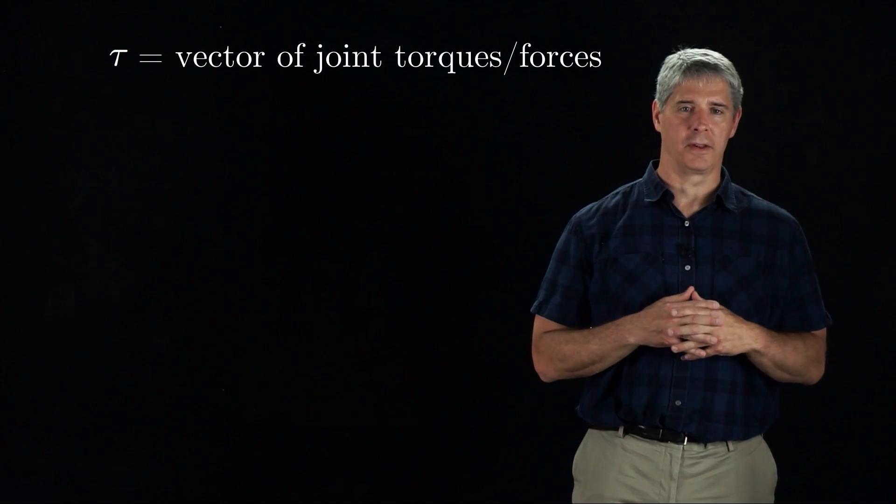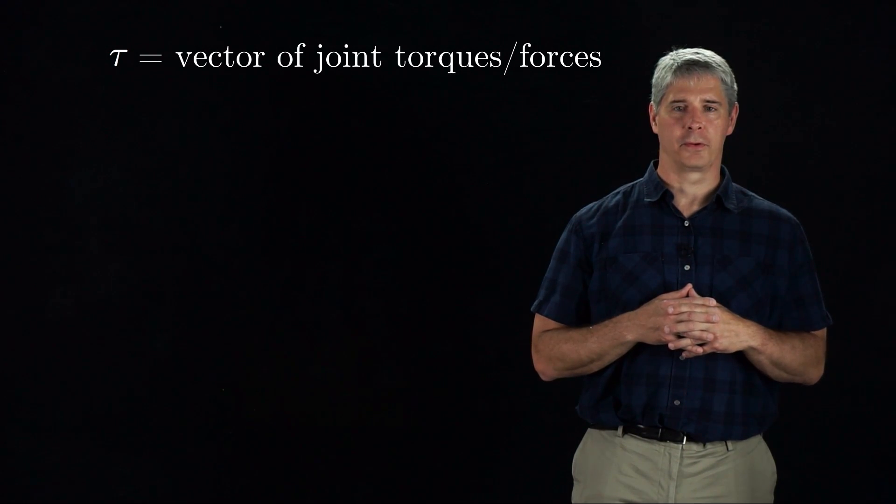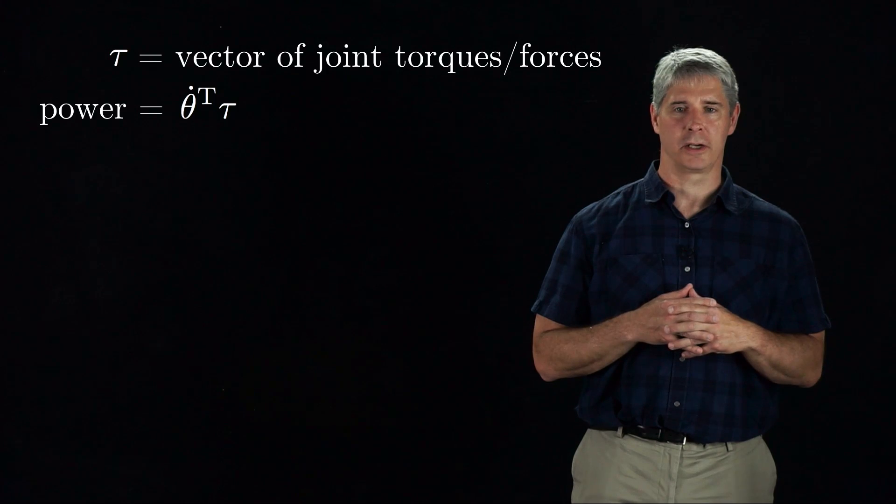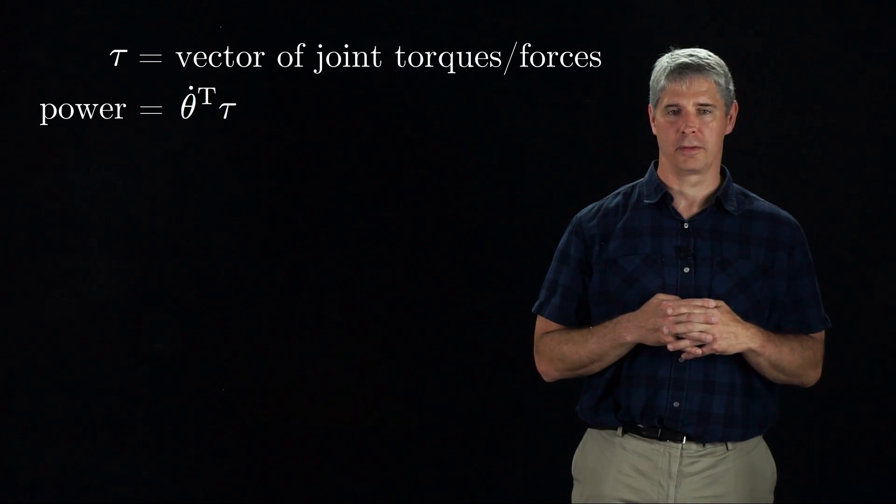From physics, we know that velocity times force is power, and the equivalent for a robot arm is theta dot transpose times tau is equal to the power produced or consumed by the robot's motors.